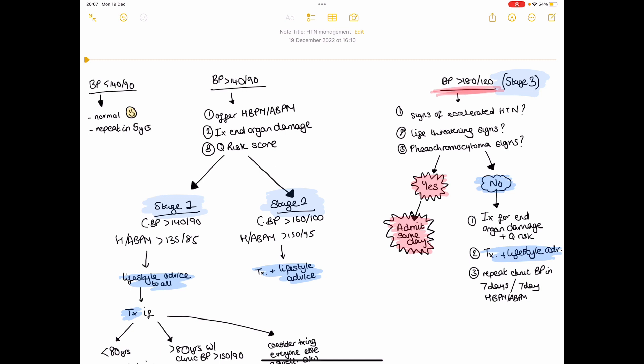So if that number is less than 140 over 90, it's somewhere like 135 over 85, anything like that, that will be classed as normal.